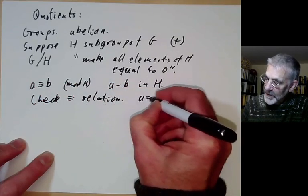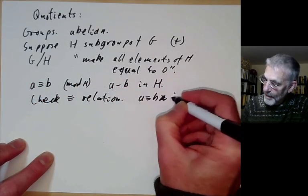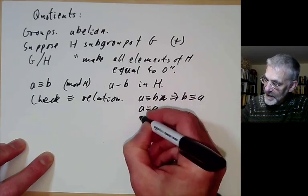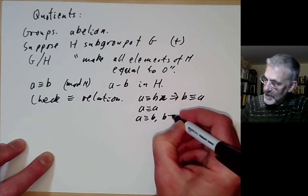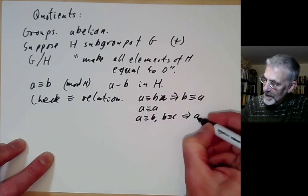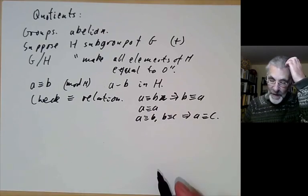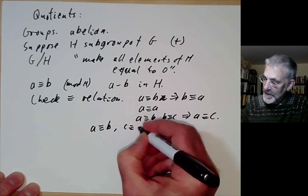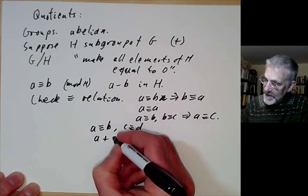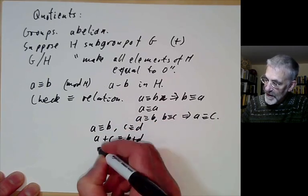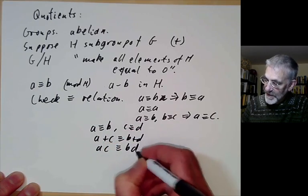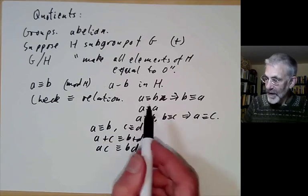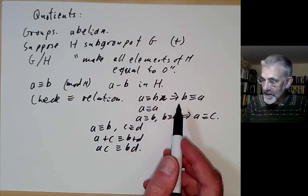We can check this is an equivalence relation: a congruent to b implies b congruent to a; a is congruent to a; and a congruent to b, b congruent to c implies a congruent to c. Moreover, if a ≡ b and c ≡ d, then a + c ≡ b + d and ac ≡ bd, and so on. So multiplication and addition preserve equivalence classes.